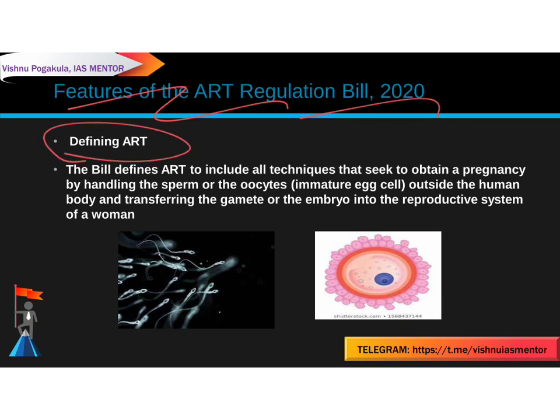There are seven features in the ART Regulation Bill 2020. The first feature is defining ART. The bill defines Assisted Reproductive Technology to include all the techniques that seek to obtain a pregnancy by handling the sperm or the oocytes — the immature egg cell — outside the human body, and then transferring them into the gamete or embryo in the reproductive system of a woman.